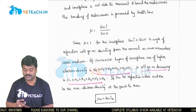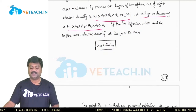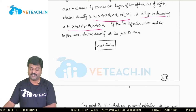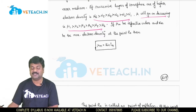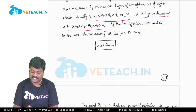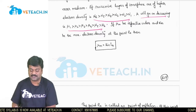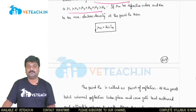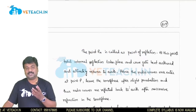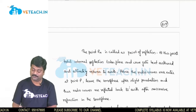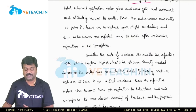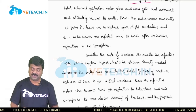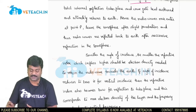If mu-m is the refractive index and nm is the maximum electron density, then at a point P we can say the point of reflection occurs where mu-m equals sin i-m — that is, mu-m is the maximum refractive index where the angle of incidence is equivalent to this refractive index. At that condition we encounter the point of reflection, where the wave reflects back to the earth.